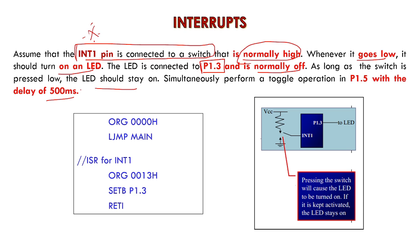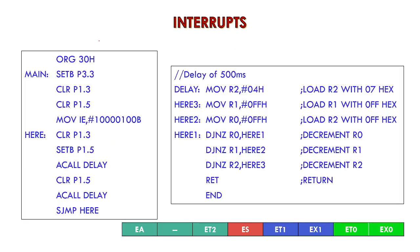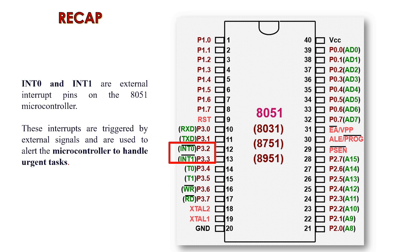Initially the interrupt pin will be high. Whenever you press, this is the logic given clearly: the interrupt pin — where is the interrupt pin? You can see the pin diagram here: interrupt one is connected to pin 3.3. Initially by default it will always be high. Whenever this is connected to switch action, that is the logic. Interrupt one is connected to switch action, so it is connected to pin 3.3.